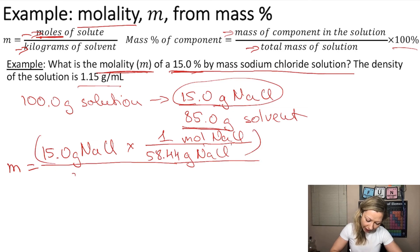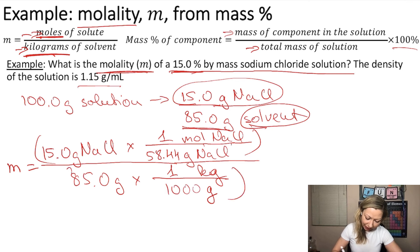we are going to have 85.0 grams, because that is the solvent. We need the kilograms of the solvent. So we are converting grams into kilograms. We know that in one kilogram, we have 1000 grams.